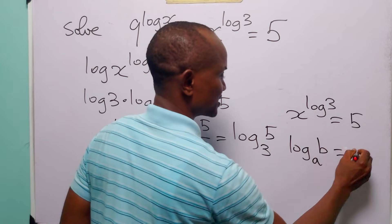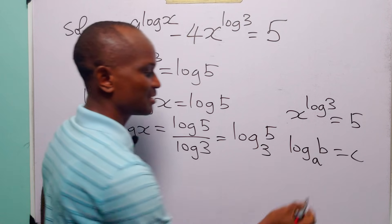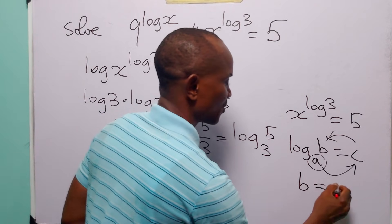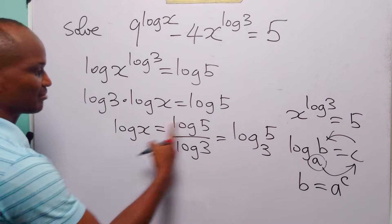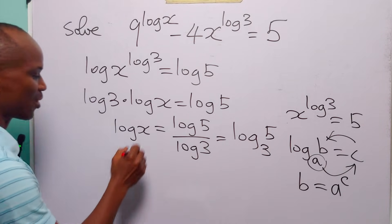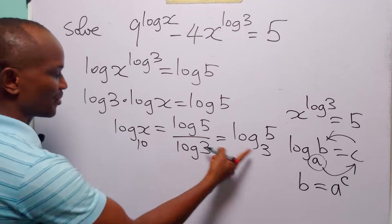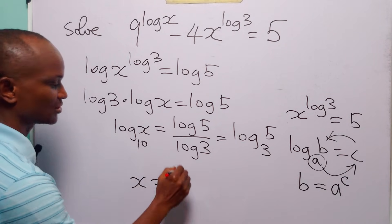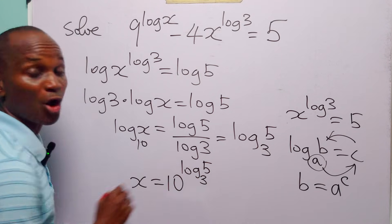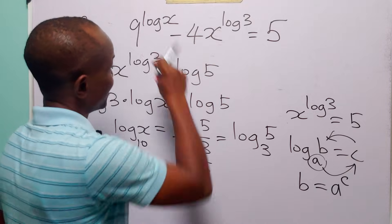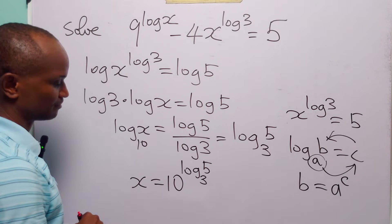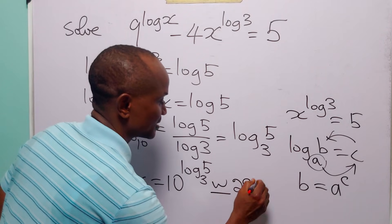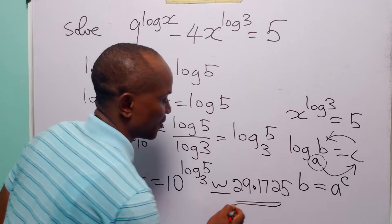Since log base a of b equals c means a to the power c equals b, and the base here is 10, we have x equals 10 to the power log base 3 of 5. This is the value of x that satisfies the logarithmic equation, and it is approximately equal to 29.1725.